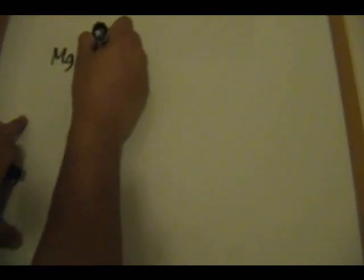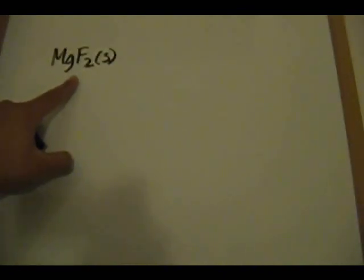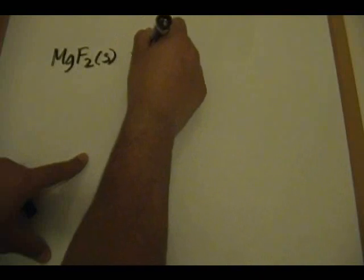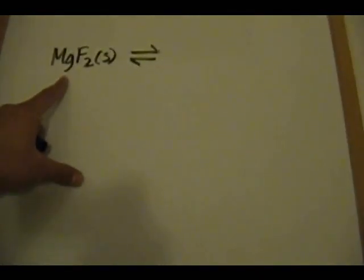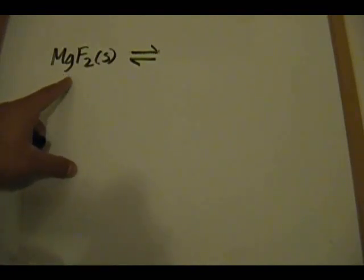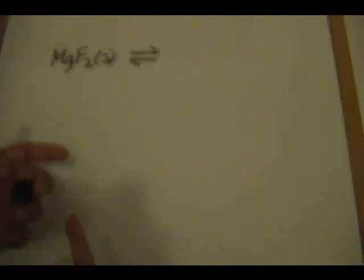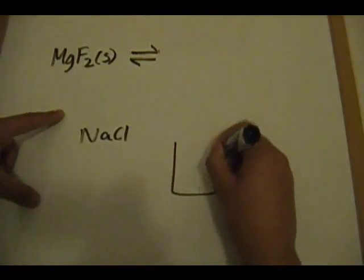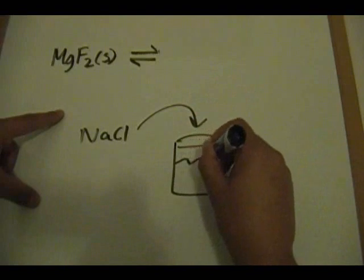In the lab, you would get a big chunk of magnesium fluoride solid. Magnesium has a +2 charge and fluorine has a -1 charge, so you need two fluorines to balance the charges. For comparison, if you toss sodium chloride (NaCl) into water, it completely breaks apart into Na⁺ and Cl⁻ ions.